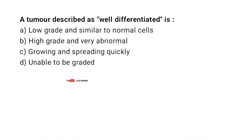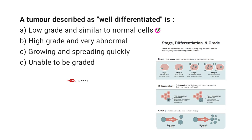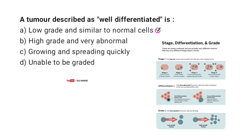A tumor described as well differentiated is: A. Low grade and similar to normal cells. B. High grade and very abnormal. C. Growing and spreading quickly. D. Unable to be graded. Correct answer: A. Low grade and similar to normal cells. Well differentiated tumors closely resemble normal cells and are usually less aggressive compared to poorly differentiated tumors.